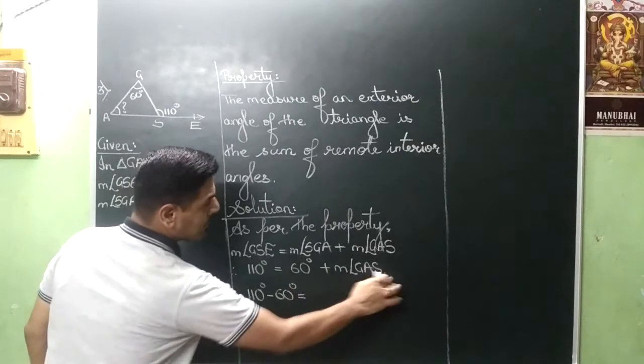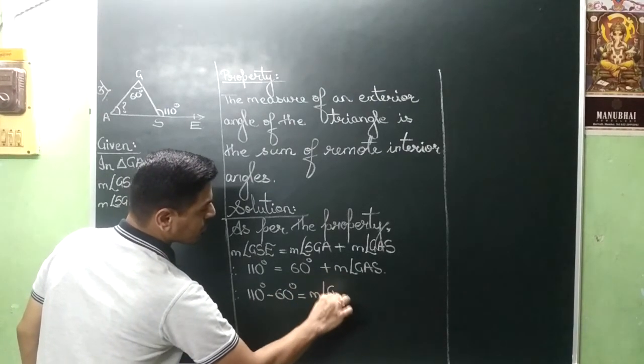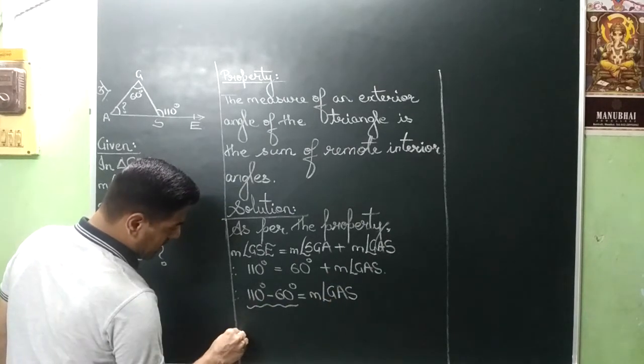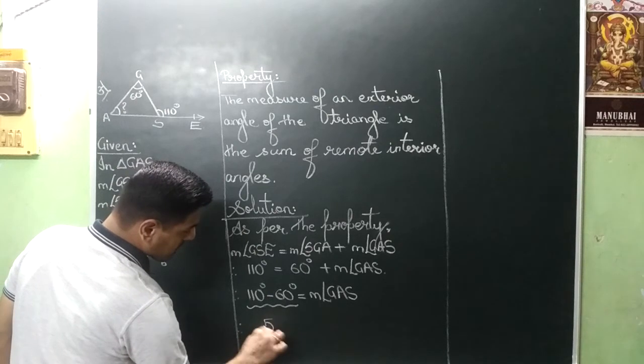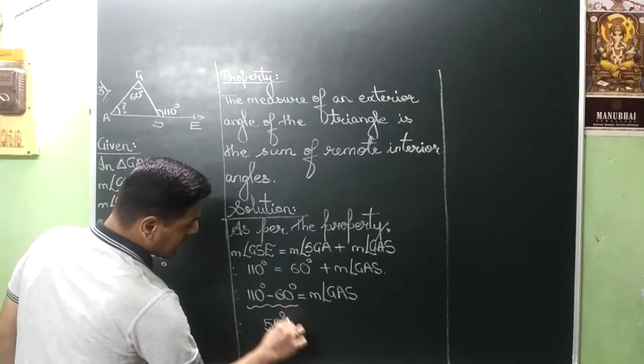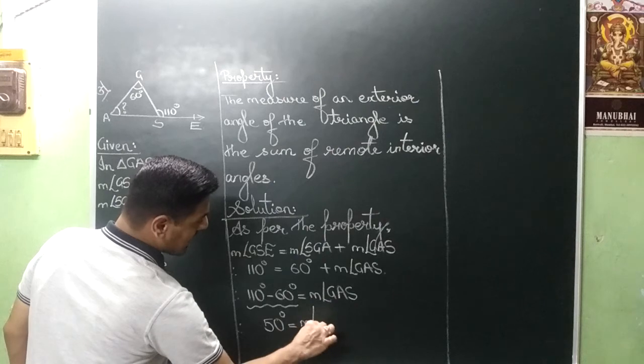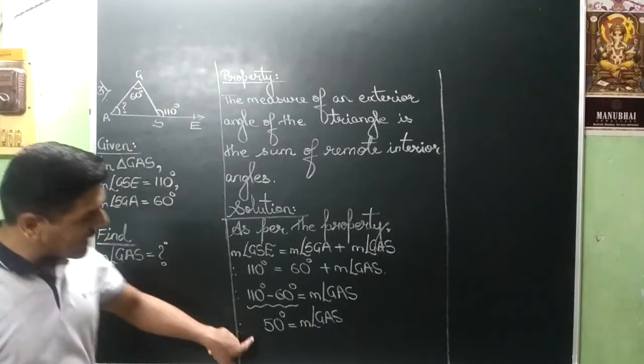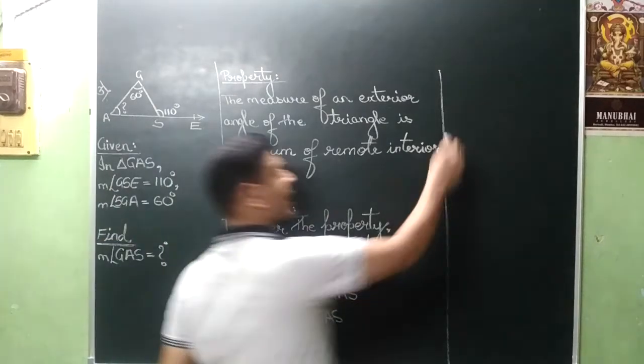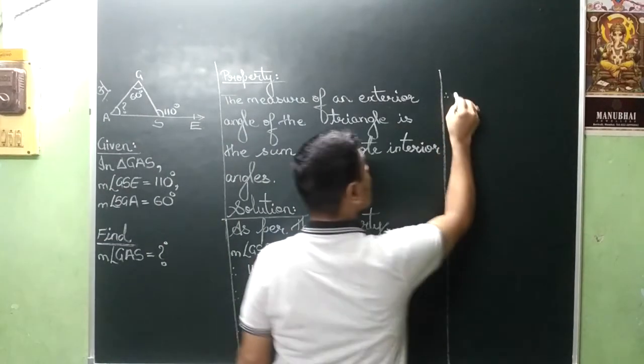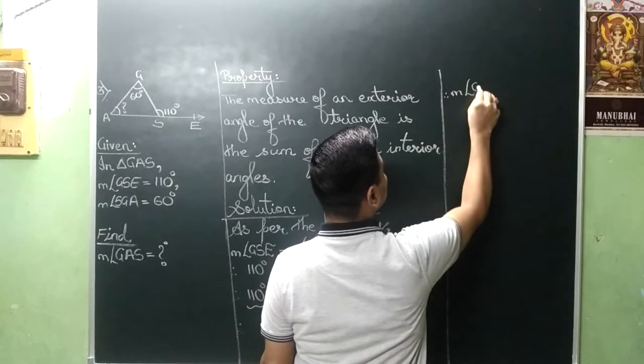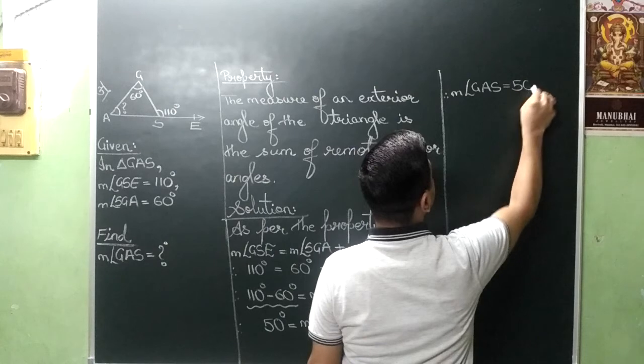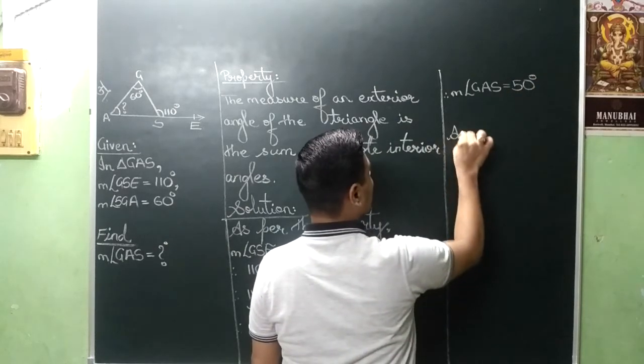Is equal to measure angle GAS. What is 110 minus 60? 110 minus 60 is 50 degrees. Is equal to measure angle GAS. Measure angle GAS is equal to 50 degrees. Leave a line.